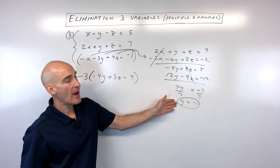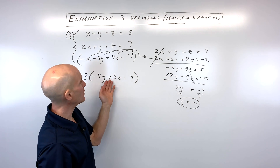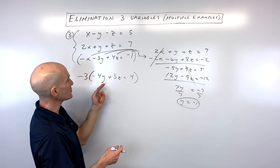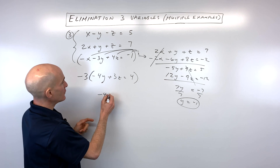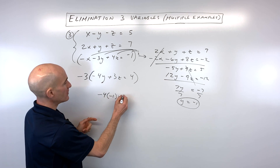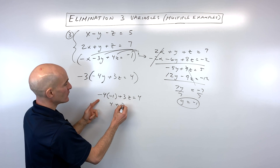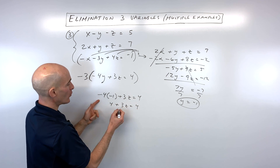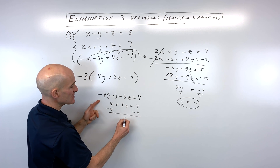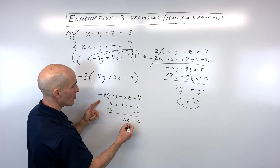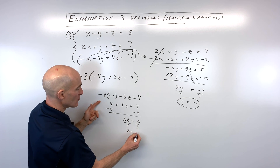Now we work our way back. We have y equals negative 1 — putting it into one of the two-variable equations: negative 4 times negative 1 plus 3z equals 4, which gives positive 4 plus 3z equals 4. Subtract 4 from both sides to get 3z equals 0. Divide both sides by 3 and z equals 0.